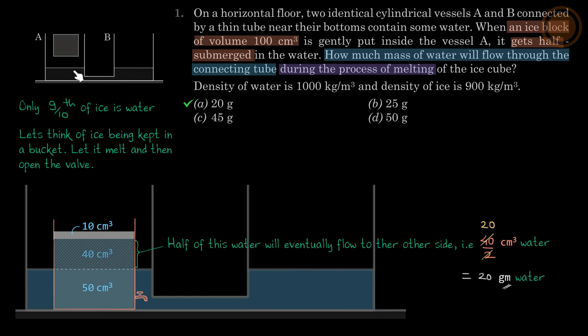We will use a different kind of way. 9/10th by volume of ice is water, so masses are the same but 9/10th volume of ice is water. So let's think of ice being kept in a bucket. Now let it melt and then open the valve.